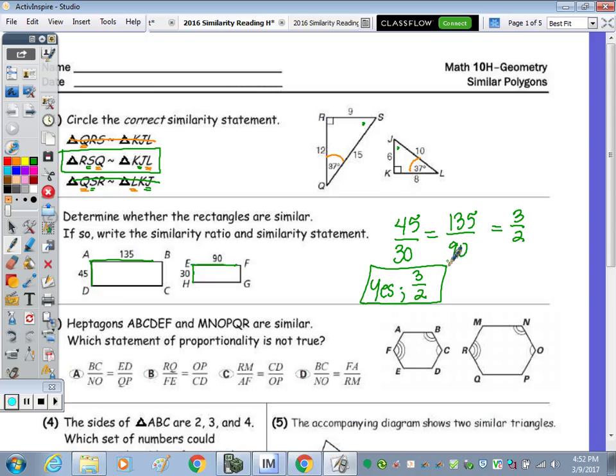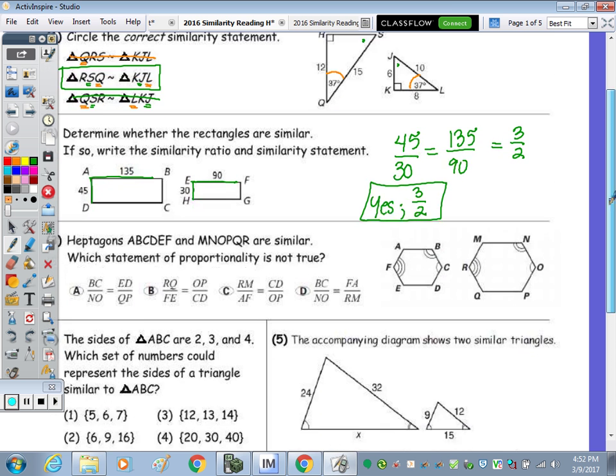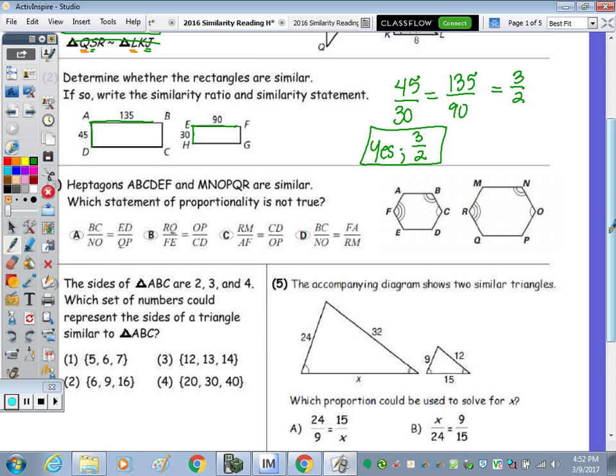We have two heptagons. Which statement of proportionality is not true? The statement that's not true is C, so let's take a look. So R to M corresponds to AF, that's true. And then we compared right to left. And then it went CD to OP. Now CD does correspond to OP, but again we're comparing right to left. So MR to AF would, it should be OP to CD in comparing right to left. So not true is C.